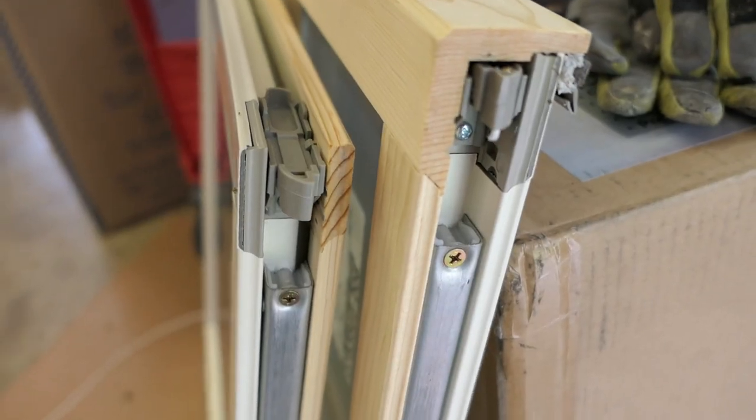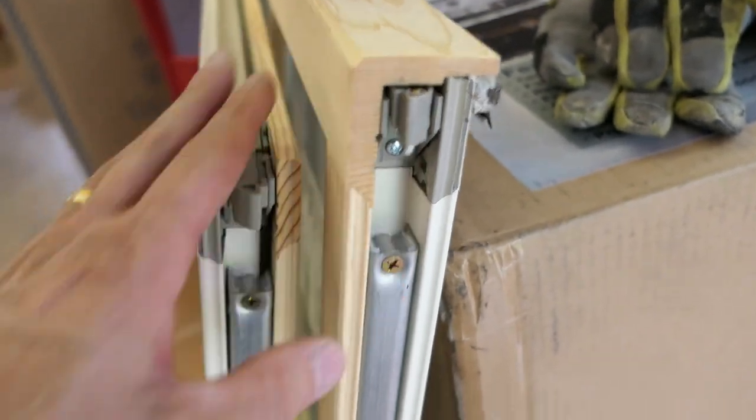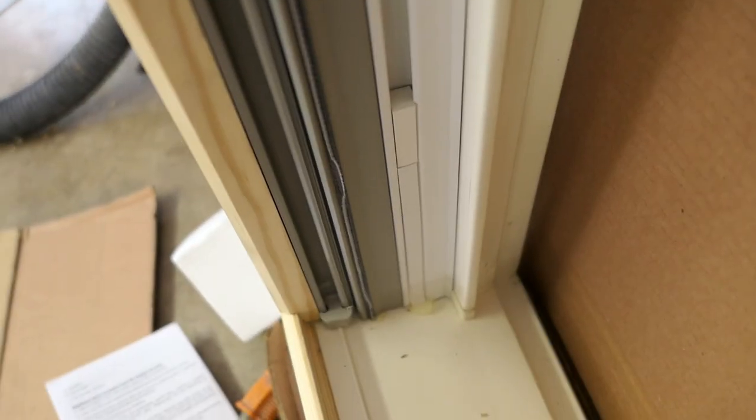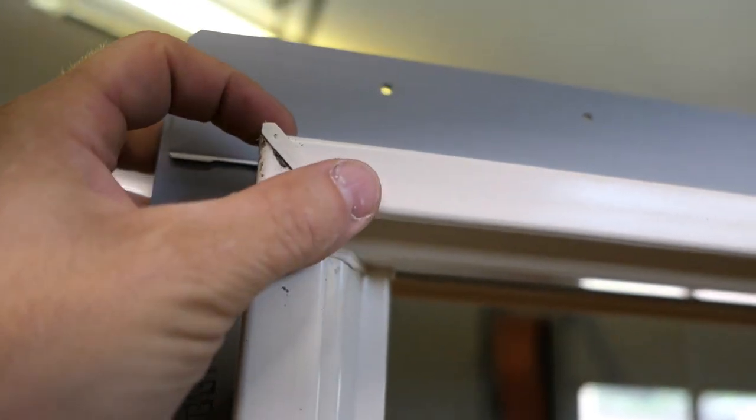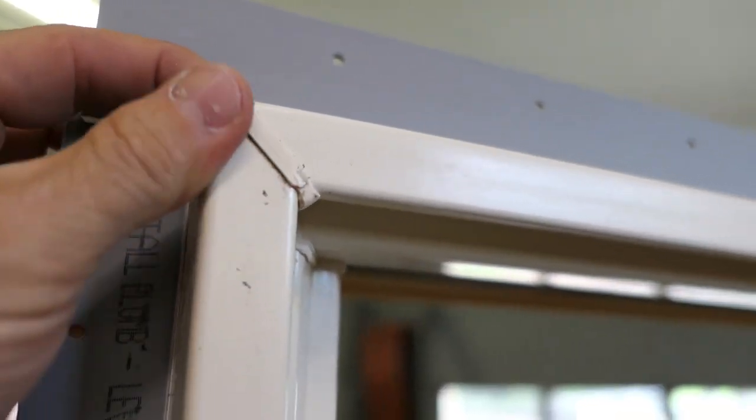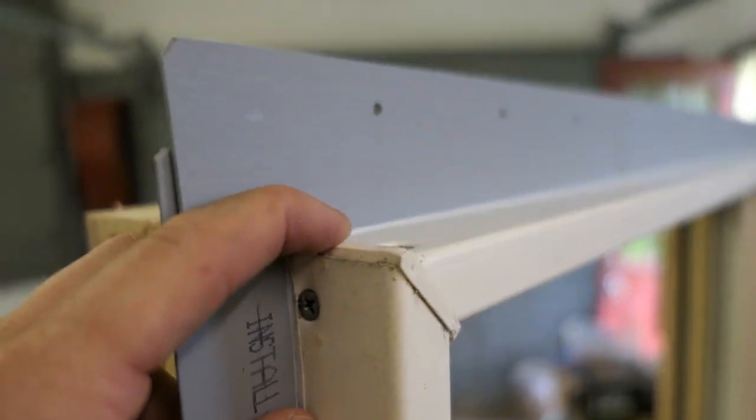If you tilt the window in and make sure that string gets pinched between this area, the spring load on the string will be released because it'll be held by that pinched area. To release the upper sash, it's a slightly different mechanism.